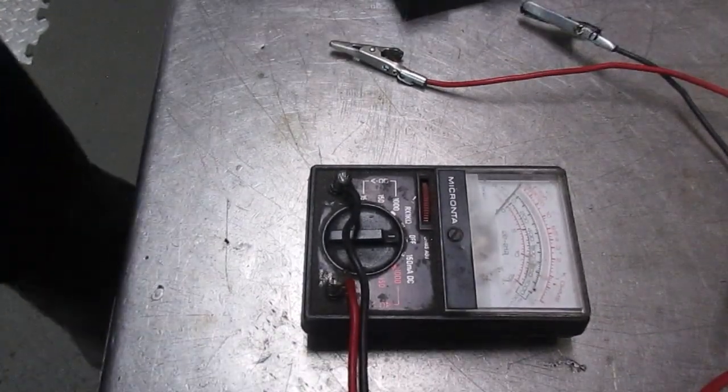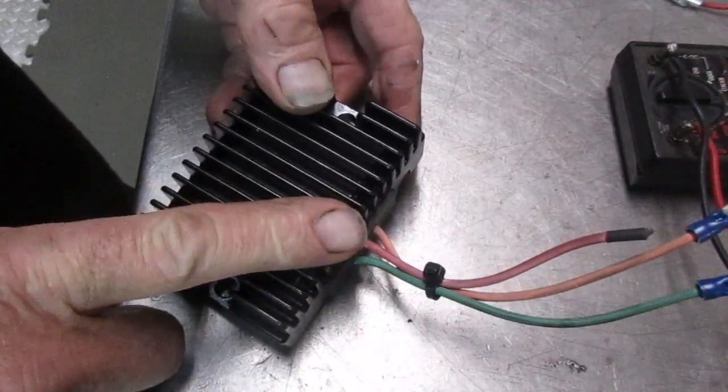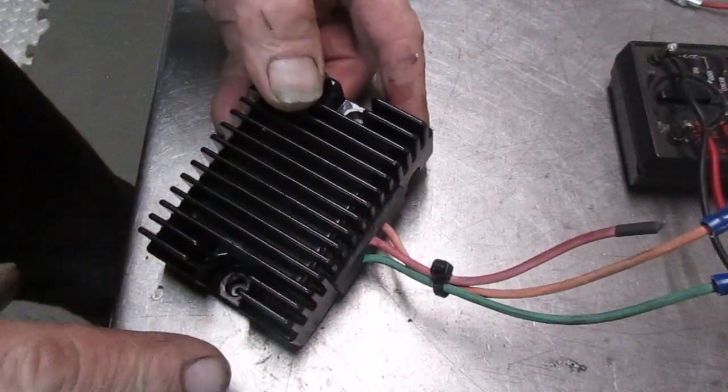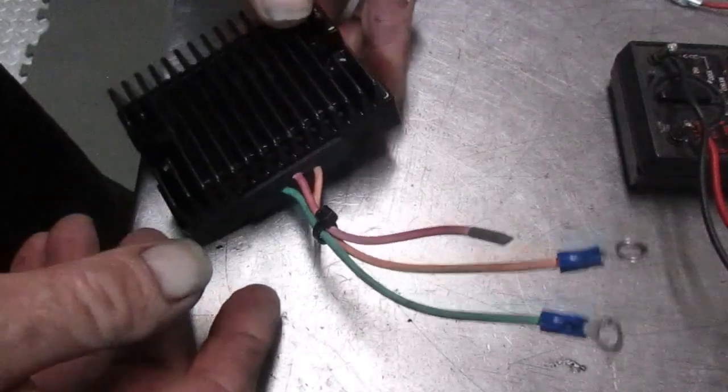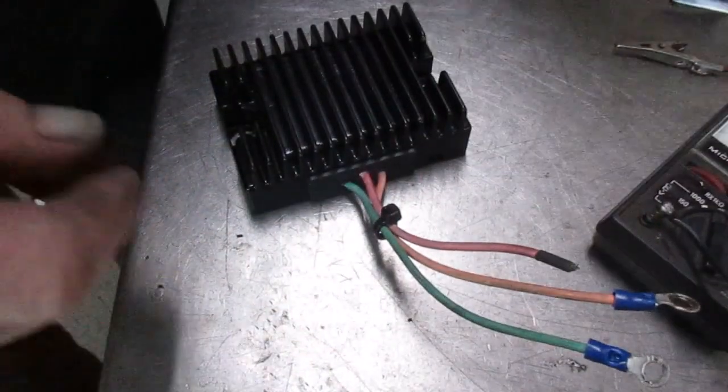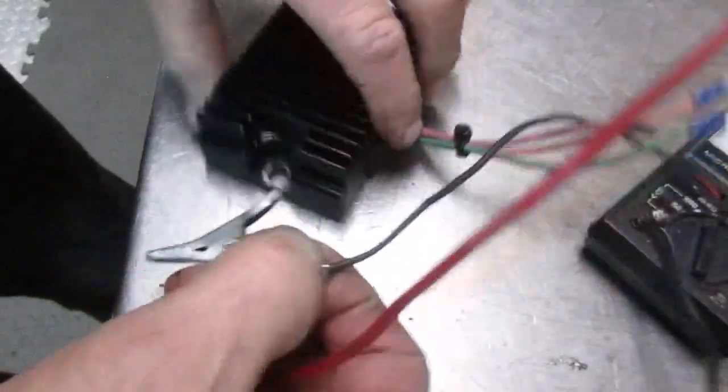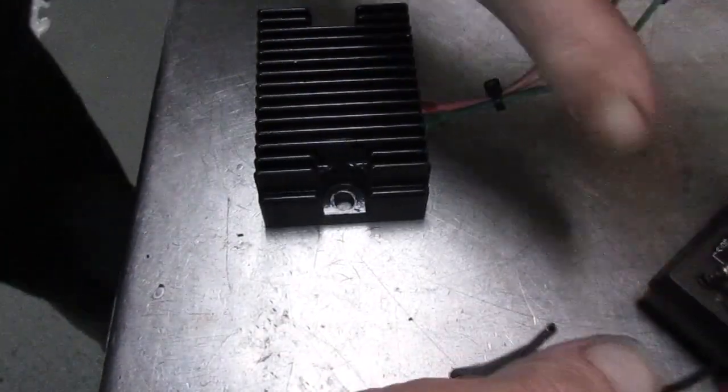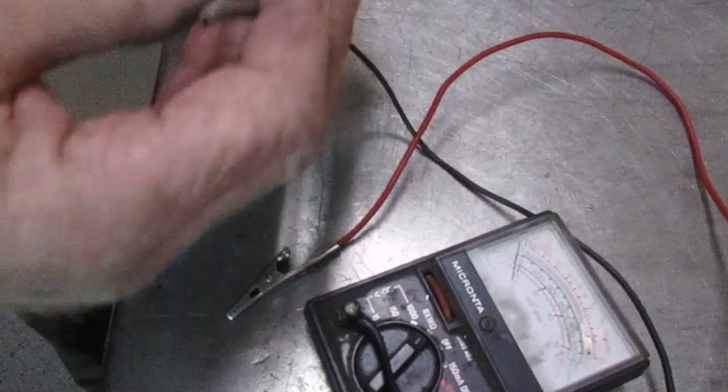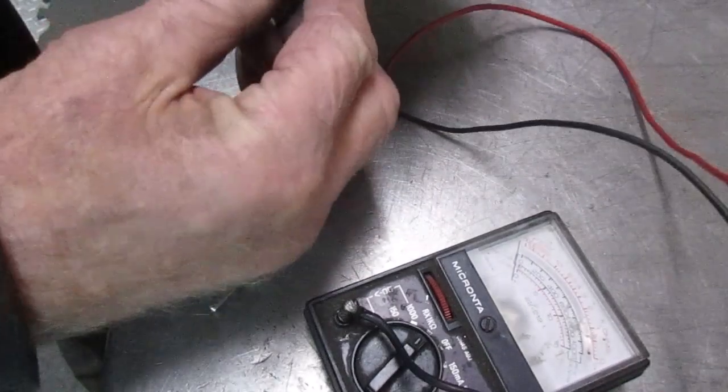Now we've checked the generator, now we're going to take a look at the regulator real quick. The electronic regulators, these things are pretty cheap, they're like 50 bucks. If I have any doubts about the regulator, I just replace it. I don't even mess with it. But you can test it just with a simple ohmmeter. Put it on ohms and by the way, if the regulator is not grounded on the motorcycle, it will not charge. So make sure that when it's bolted down, you get a good ground.